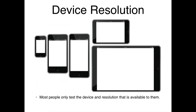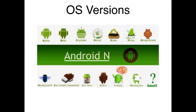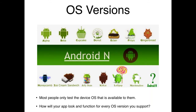Device resolution: most people only test with the device resolutions available to them. If you only have a couple of phones in your QA department, how do you know your designs look and function correctly on all different resolutions you support? OS versions: on Android there are around 14 different versions, and most people only test the versions available to them. If you support all 14 Android versions, how do you verify your app looks and functions correctly on all of them unless you actually test them?